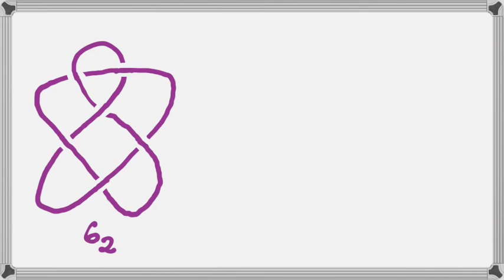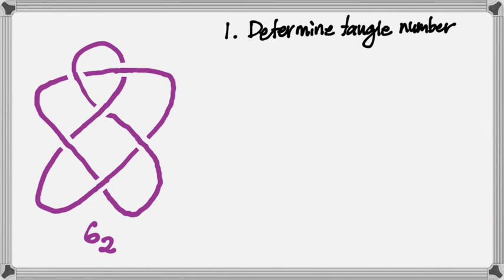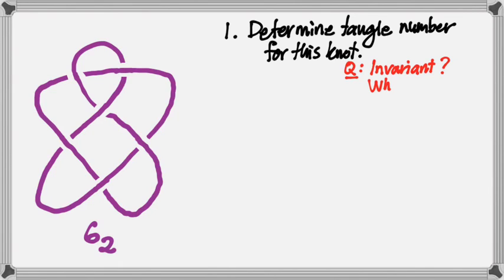The first question for today is how to take this knot and determine a tangle number, and attempt to have that tangle number stand in as an invariant for knots in some way. So: determine the tangle number for this knot. The question I have for all of us in doing that process is: is this an invariant? And in particular, what choices did we have to make along the way?